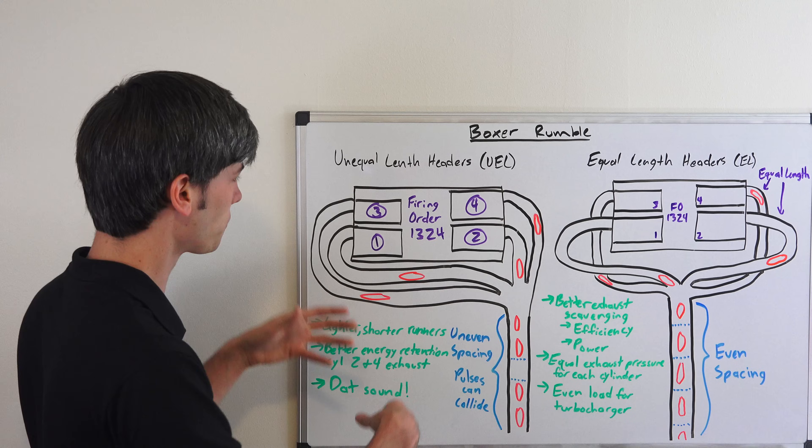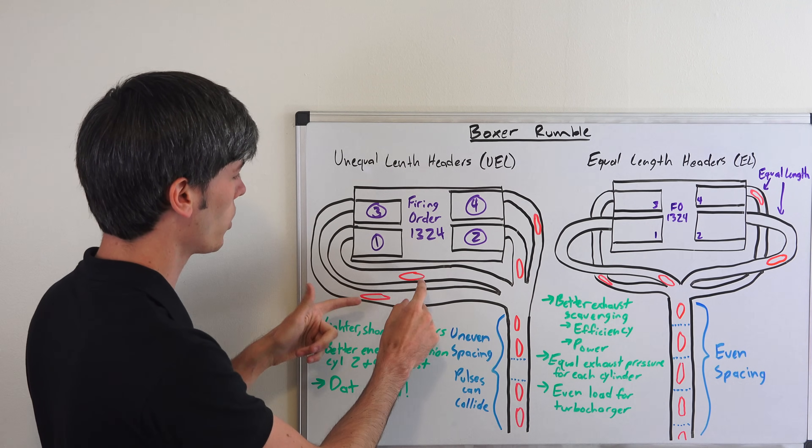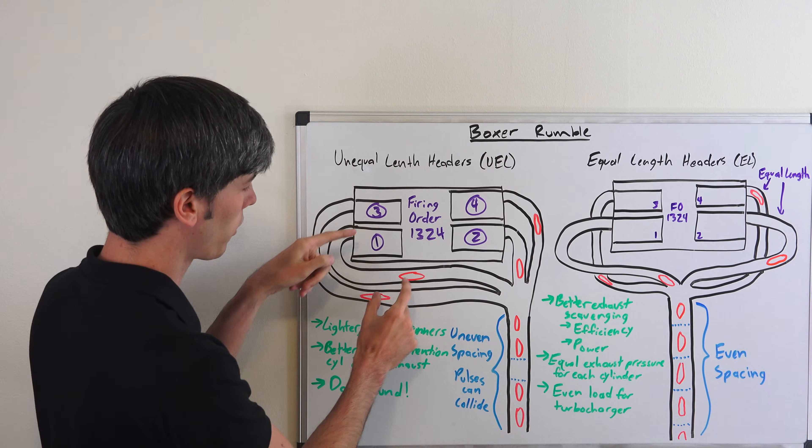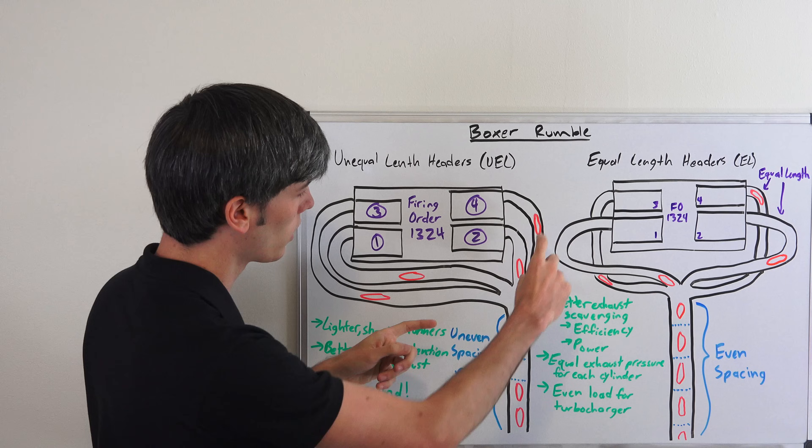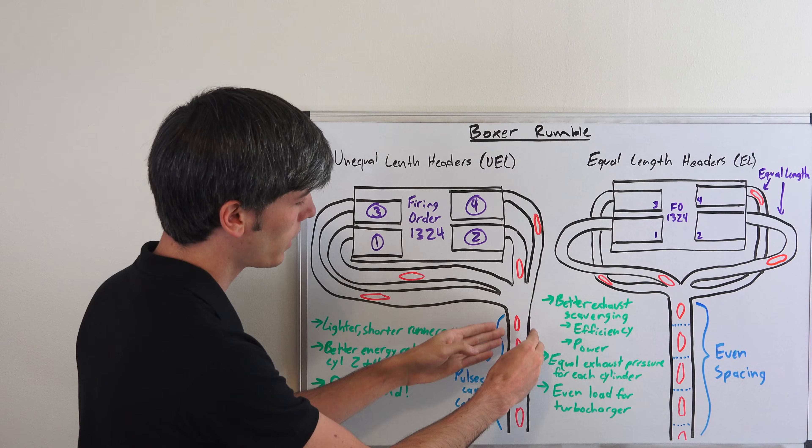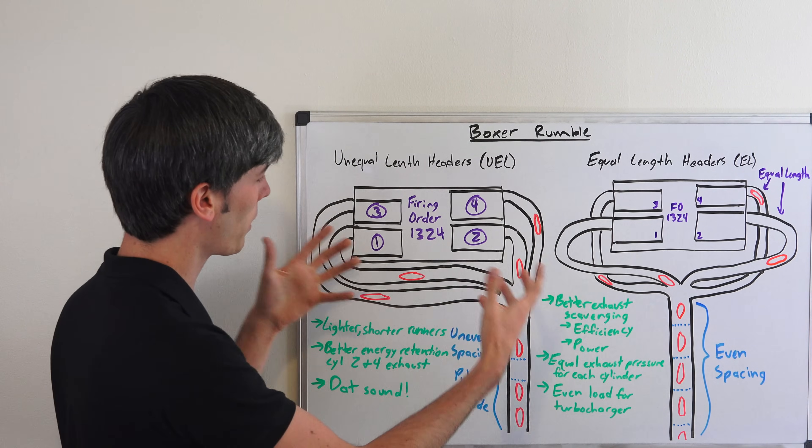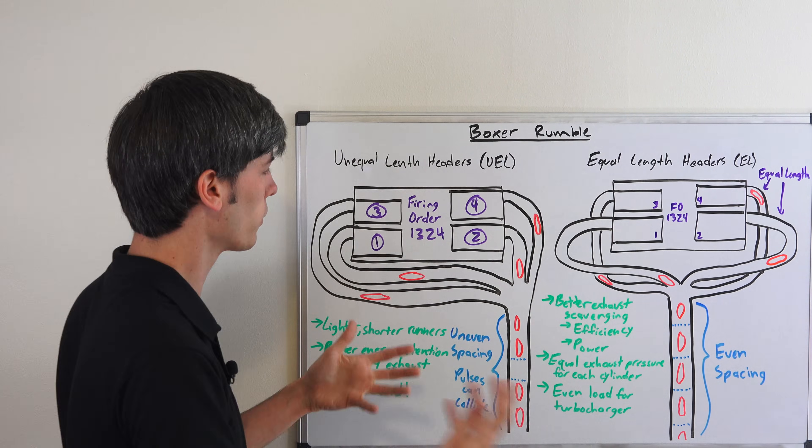With the firing order as shown, you're going to have pulse one, then three like this, then two, and then four. As these meet up into the single pipe, there's going to be an uneven spacing depending on the RPM, how much you're flooring it, things like that.